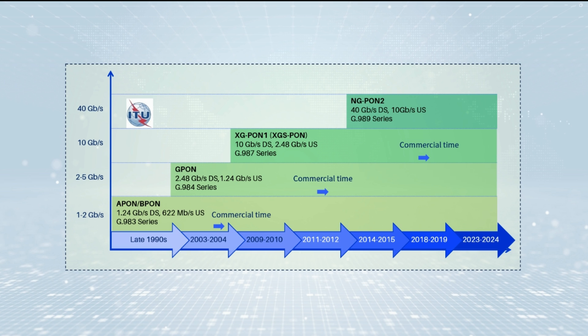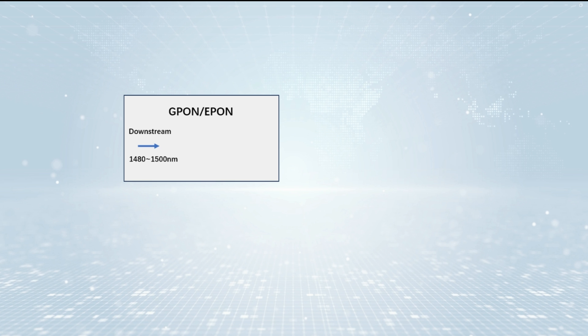EPON and GPON belong to 1G PON technology. The downstream wavelength is 1,490 nm and the upstream wavelength is 1,310 nm.